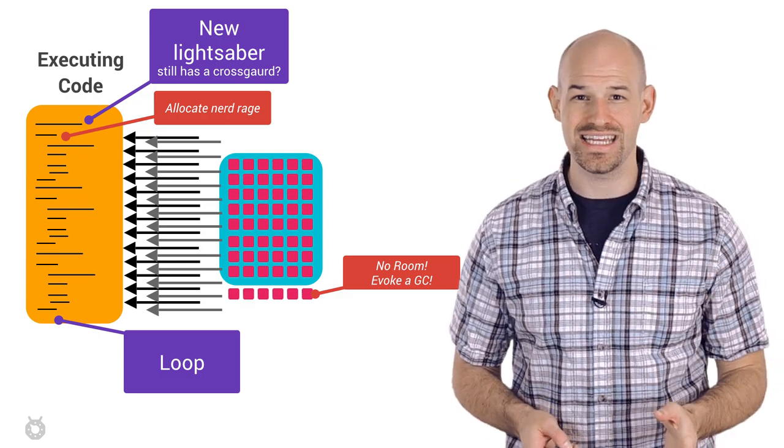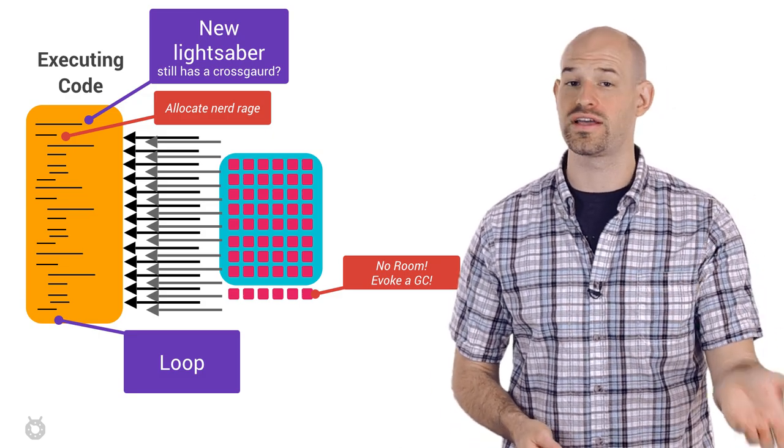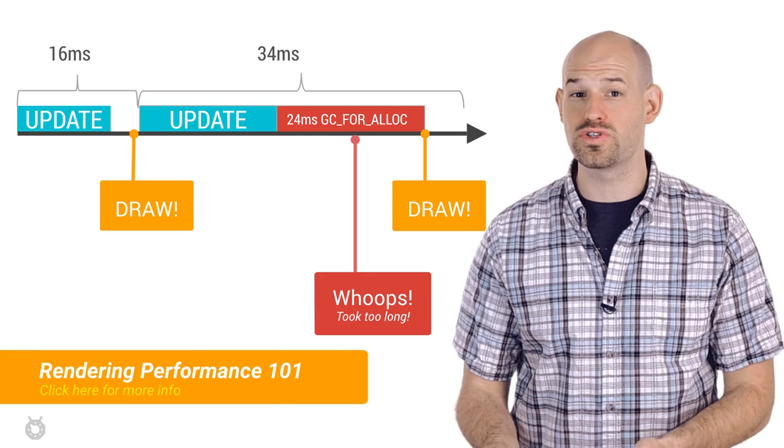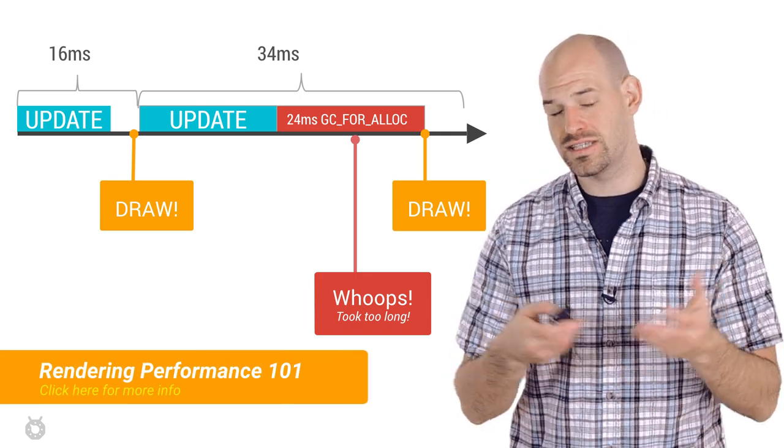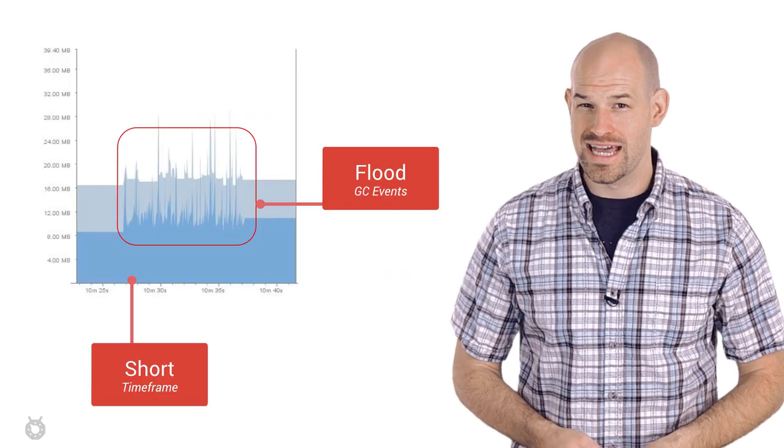Even if the memory allocations are tiny, the volume of them creates pressure on your heap to kick off more GC events over time, which can eat into your precious frame time and cause the user to notice a performance difference, since you'll eventually be slipping past your 16 millisecond rendering barrier.